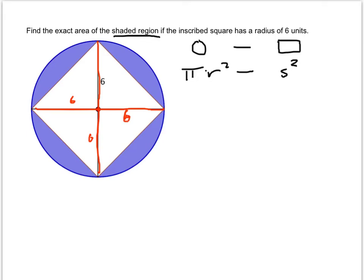And so, to find one side length of the square, we can consider this triangle. We know it's an isosceles triangle because two of the legs are 6.